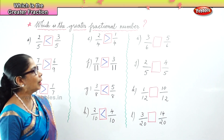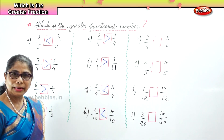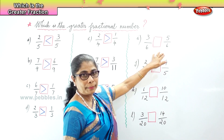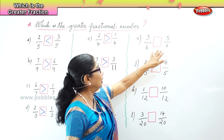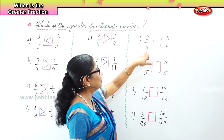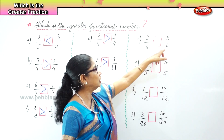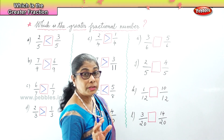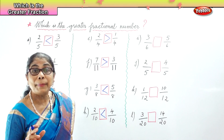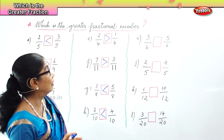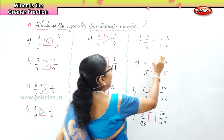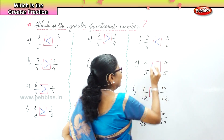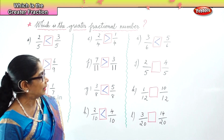Now let's look at the next sum. The denominators are the same — six. We have three by six and five by six. The whole is divided into six parts — three parts out of six, five parts out of six. The denominators are the same. The numerator five is bigger than three. Therefore, five by six is greater than three by six.